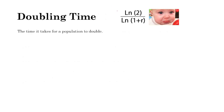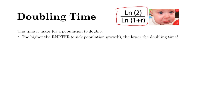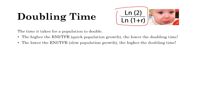Doubling time is the time it takes for a population to double in size. It's inversely proportional to population growth rate: the higher the RNI and birth rate, the quicker the population grows, so the doubling time is lower. The lower the TFR or RNI, the higher the doubling time, because it takes longer to replace and double the current population.